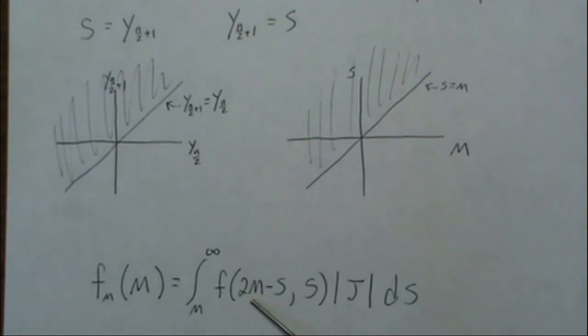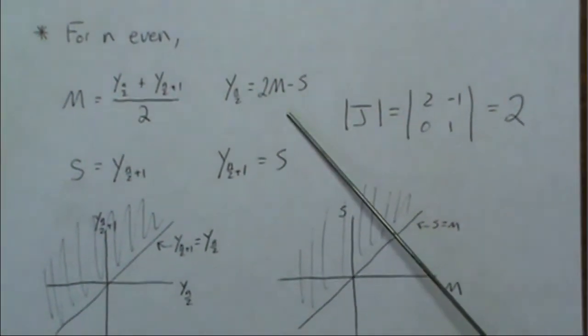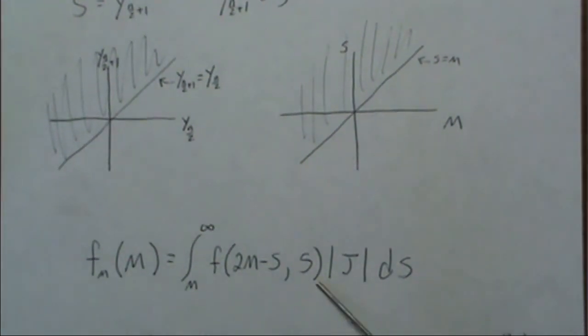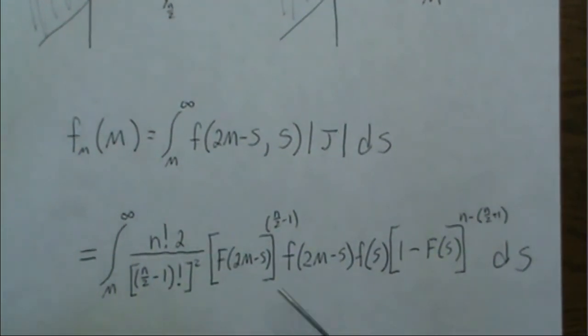And f is the density for the two-order statistics. And then we plug in these values, M minus X and S for our variables, times absolute value of the Jacobian, which is 2. And then that boils down to this expression.